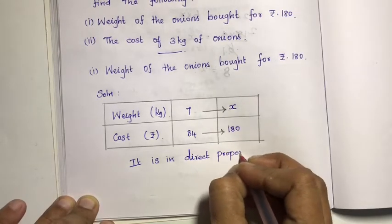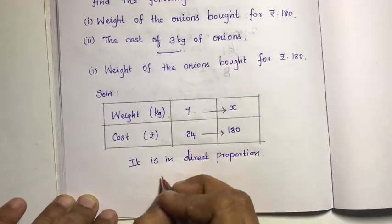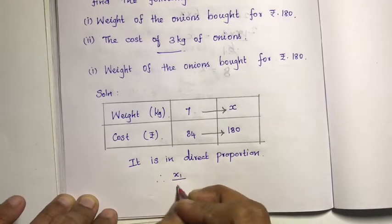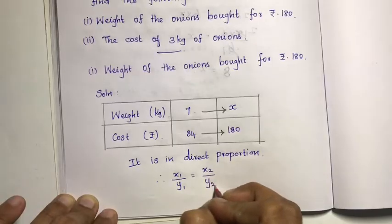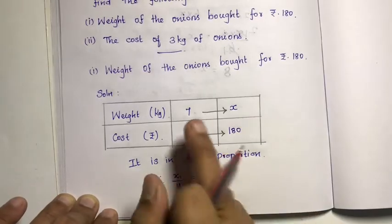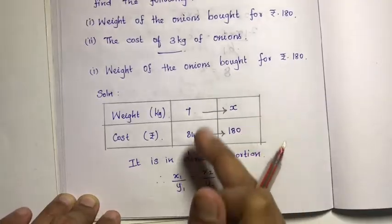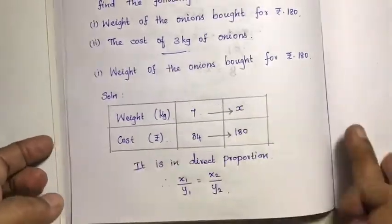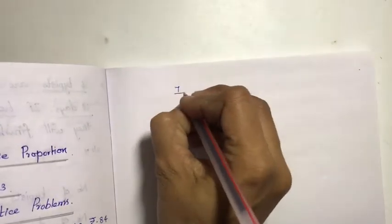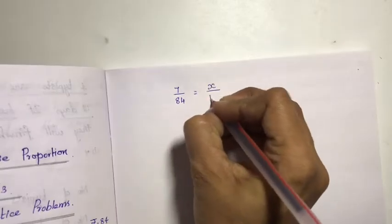Direct proportion formula: x1 by y1 is equal to x2 by y2. So x1 is 7, y1 is 84, x2 is unknown (x), and y2 is 180. Therefore: 7 by 84 is equal to x by 180.